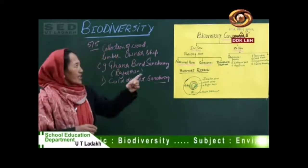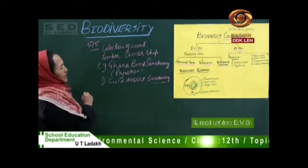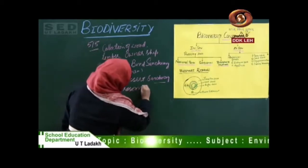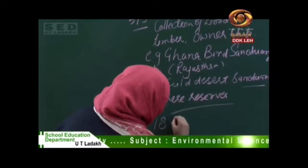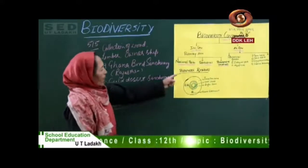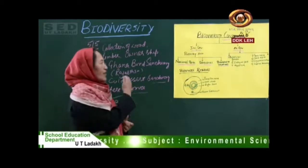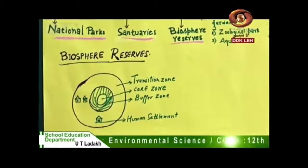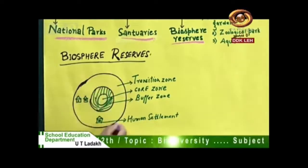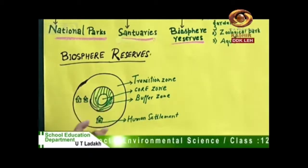These activities are allowed as long as wild animals are not disturbed. Everything is maintained under sanctuaries. The third type is the biosphere reserve, of which there are 18 in India. A biosphere reserve is a place where conservation of wildlife is done with the help and control of human beings. It is classified into three zones: a transitional zone, a core zone, and a buffer zone in between.